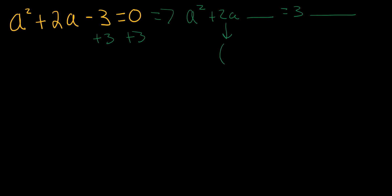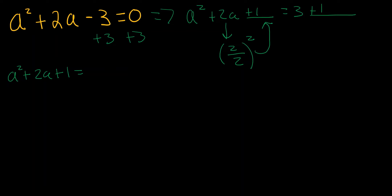Now we have to take half of b and square it. Our b in this case is 2. So we divide that by 2 and then square it — that's what goes in the blanks. 2 divided by 2 is 1, and 1 squared is just 1. So we add 1 to both sides. The equation simplifies to a² + 2a + 1 = 4.